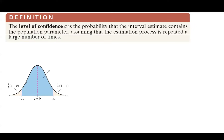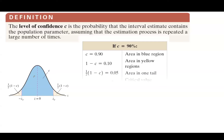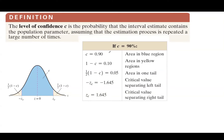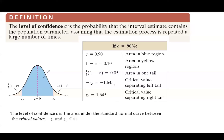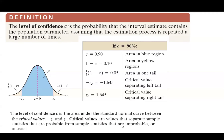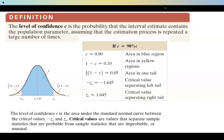Remember how we calculated critical values. When we say that c, the level of confidence, is 90%, it means the blue shaded region has area 90%. 100% minus 90% gives us 10%. 10% divided by 2 gives us 5%. Five percent of the area is on the left and the other five percent is on the right. Using our calculator with inverse norm, we can find the critical value, which separates sample statistics that are probable from those that are improbable or unusual.